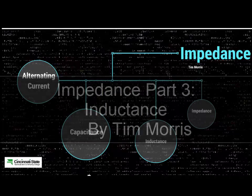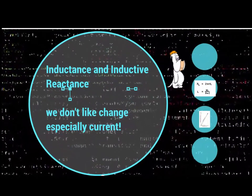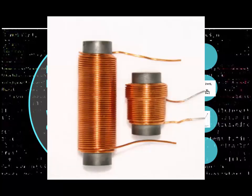Now, let's talk about inductance and putting a coil into this circuit — inductance and inductive reactance. Coils do not like changes in a circuit to the current. They don't like us to change the current.